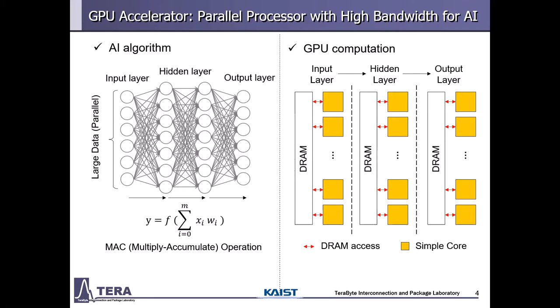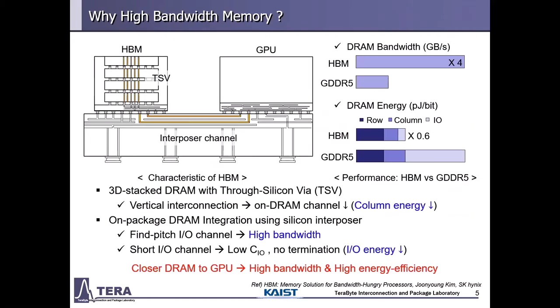That is why the GPU requires high bandwidth memory. This slide shows why HBM is widely adopted. HBM is a 3D-stacked DRAM with through-silicon vias, integrating the processor and DRAM on one package using a silicon interposer. There are two main ideas in HBM. One is vertical interconnection with TSV. By vertical interconnection, HBM reduces DRAM column energy through reduced channel length. The other is a short fine-pitch interposer channel, which provides 256 GB/s data bandwidth at low speed and extremely reduces I/O channel capacitance with no termination.